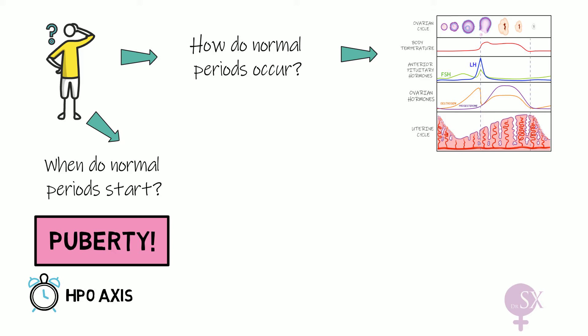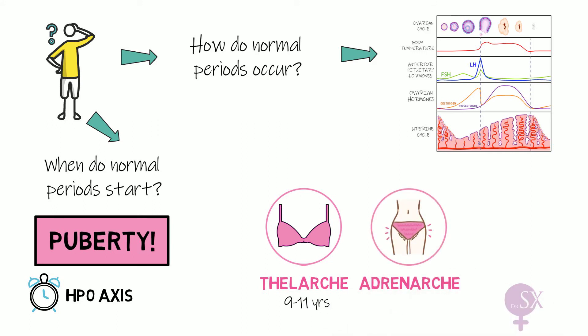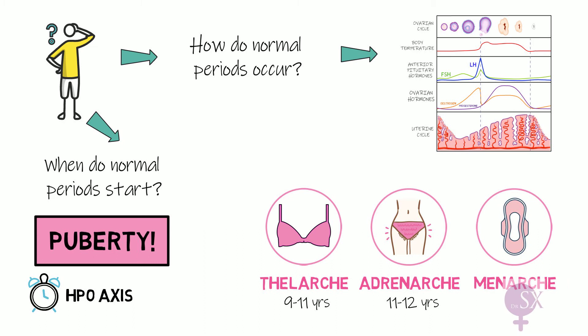When the HPO axis wakes up, it wakes up the ovaries to start producing oestrogen, which sets off puberty. First we have the development of the breasts, which we call thelarche, occurring at around 9 to 11 years. Then pubic hair starts to grow, referred to as adrenarche, occurring at around 11 to 12 years. Finally, periods start at menarche, which occurs on average at 13 years of age.